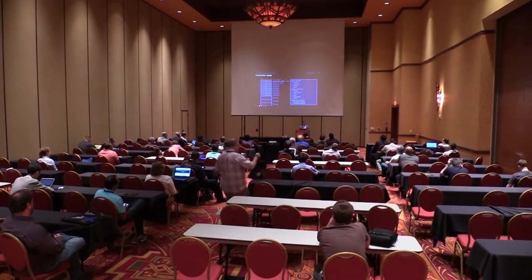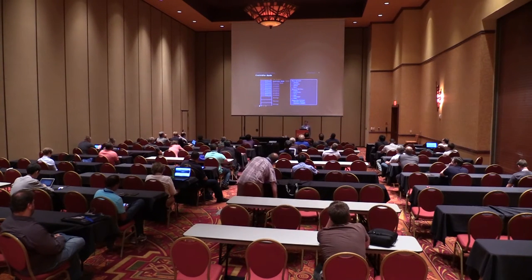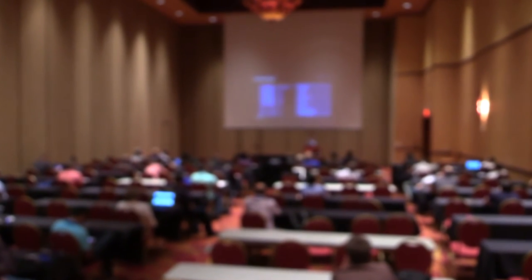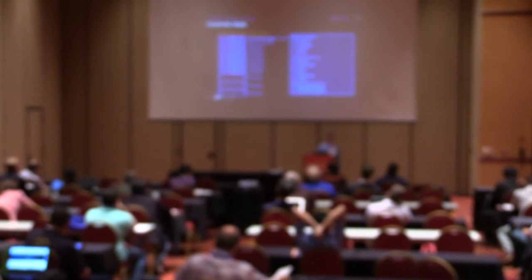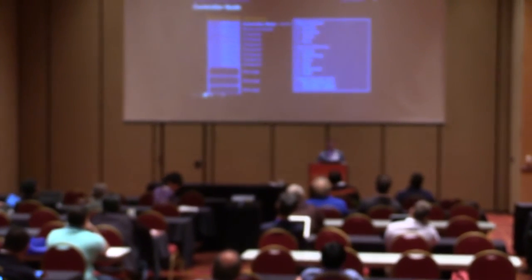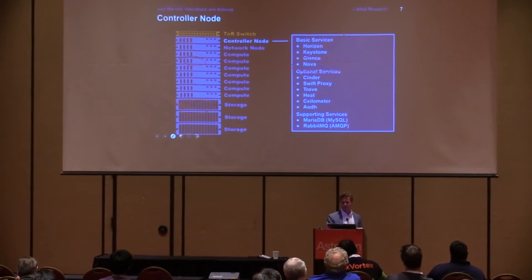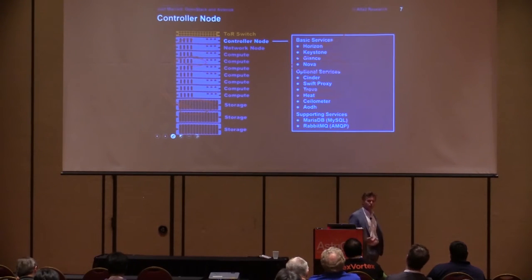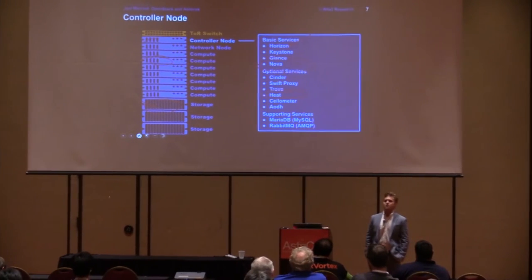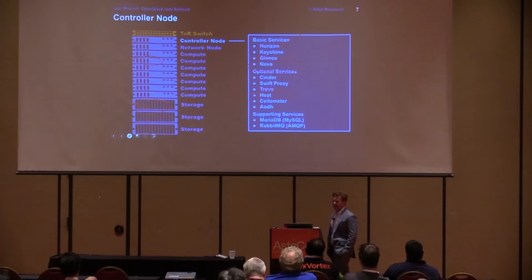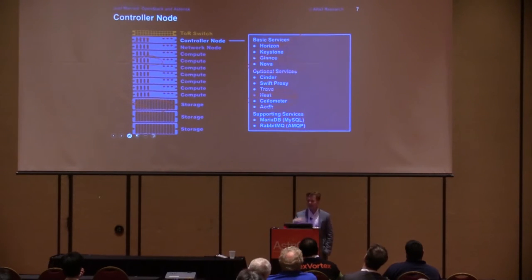Optional services — though Cinder should probably be bumped to basic services — Cinder makes block storage available. Think of it like attaching a hard drive; Cinder reaches out, provisions a volume off a storage node, and uses iSCSI to connect it to a VM running on compute. Swift proxy handles object storage. Trove is database as a service. Heat is a big deal — we can write scripts that automate creation of virtual infrastructure. IBM has a commercial about 'the cloud expands on demand' — that's exactly what Heat does in an OpenStack environment.